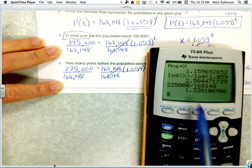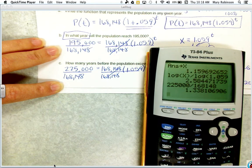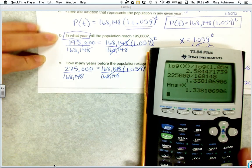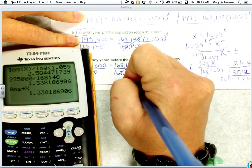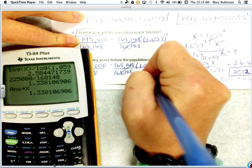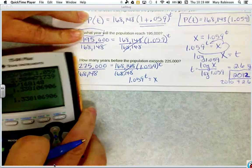225,000 divided by 168,148, we get another irrational value. So again, I'm going to just store it as x.